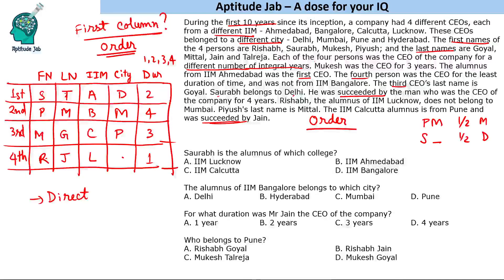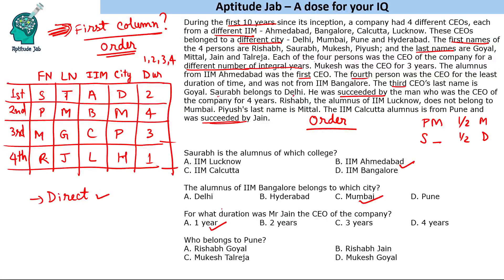IIM Lucknow person does not belong to Mumbai, so Rishabh belongs to Hyderabad, and Piyush Mittal belongs to Mumbai. The fourth city is Hyderabad. That is how we solve this puzzle. The key is the first column and starting with direct data. To answer the questions: Saurabh is the alumnus of IIM Ahmedabad; IIM Bangalore person is from Mumbai; Mr. Jain was CEO for one year; the person from Pune is Mukesh Goyal.